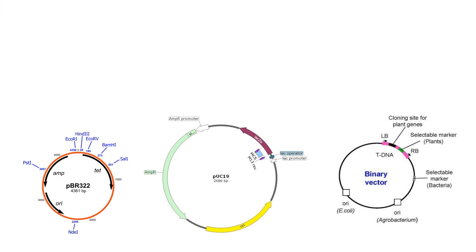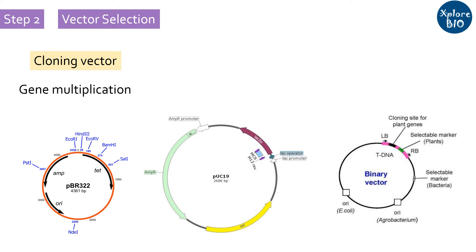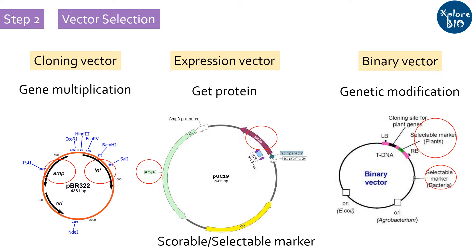The next step is selection of a suitable vector. You may choose a cloning vector if the purpose is gene multiplication, or an expression vector if the purpose is to get an expression product — that is, a specific protein — or you may choose a binary vector if the purpose is developing a genetically modified organism. All these vectors should have one or more markers such as GUS, GFP, RUBI, or antibiotic resistance genes for screening or selection of transformed cells containing the desired DNA fragment.